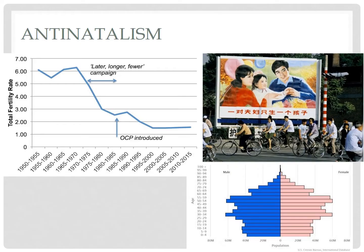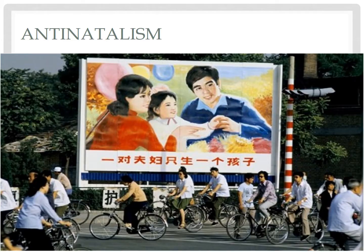The teachings of Confucius in China valued large, multi-generational families that lived together. Combine those cultural values with the economic benefit of having many children that could help grow up in an agricultural community. The total fertility rate in China in 1949 was over six babies per woman. But rapid population growth led the Chinese government in the 1970s to push antinatalism, with media campaigns advocating later marriage, longer times between pregnancies, and fewer babies overall to curb the high total fertility rate.